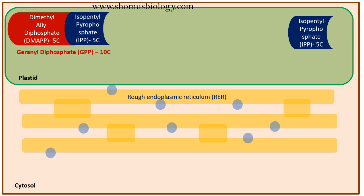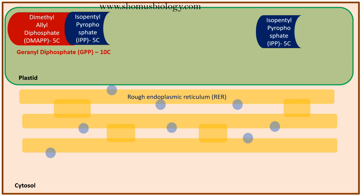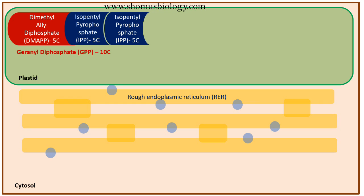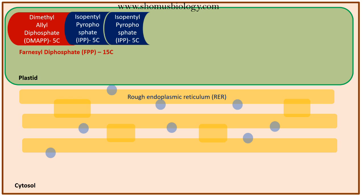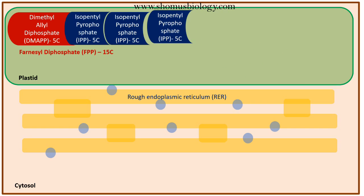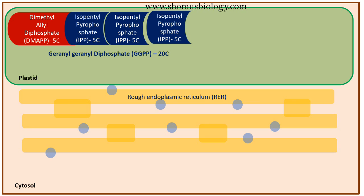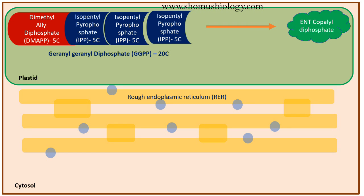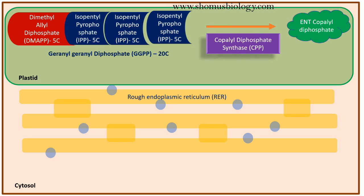Then another isopentyl pyrophosphate (IPP) associates with geranyl diphosphate (GPP) to form the 15-carbon compound farnesyl diphosphate (FPP). Then yet another IPP associates with the farnesyl diphosphate to form the 20-carbon compound geranylgeranyl diphosphate (GGPP).